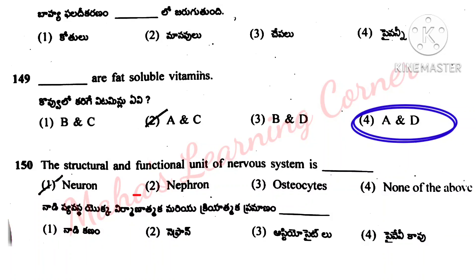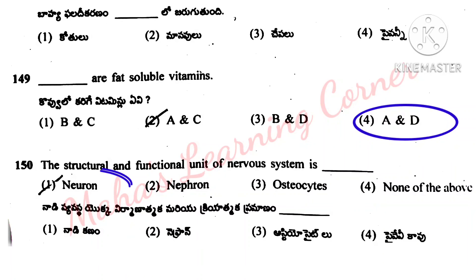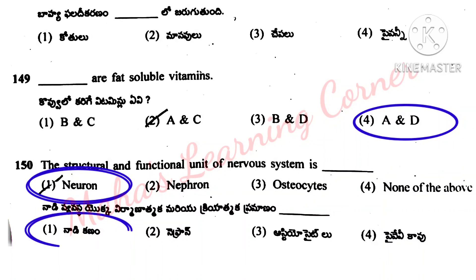The structural and functional unit of the nervous system is: neuron, nephron, osteocytes, none of the above. Correct answer option 1: neuron.